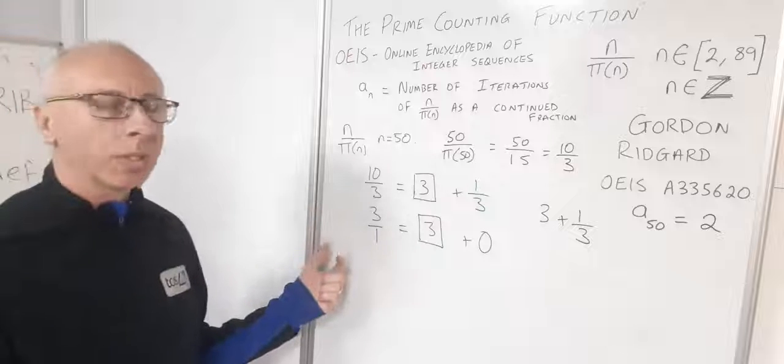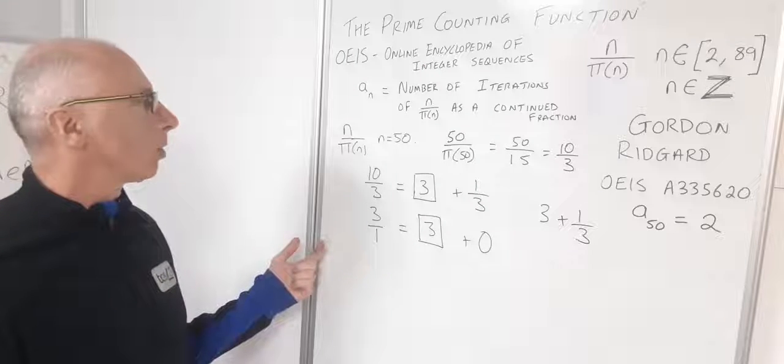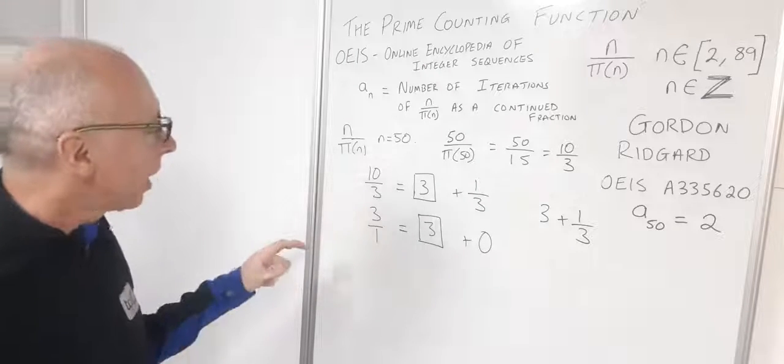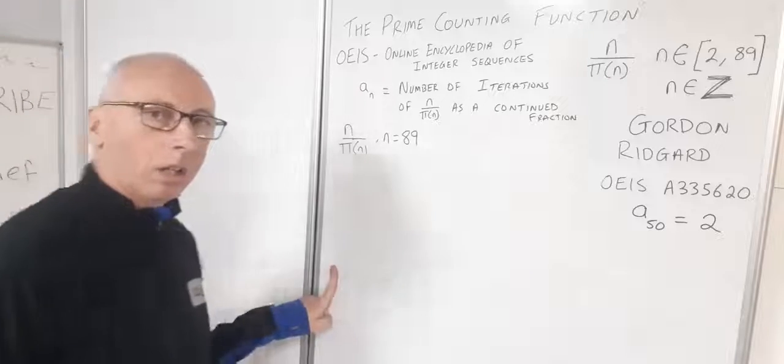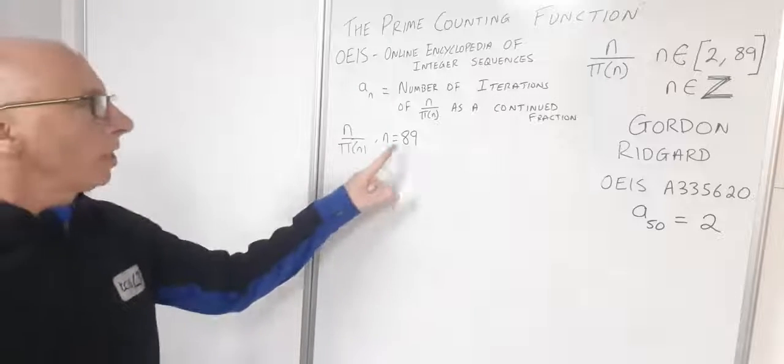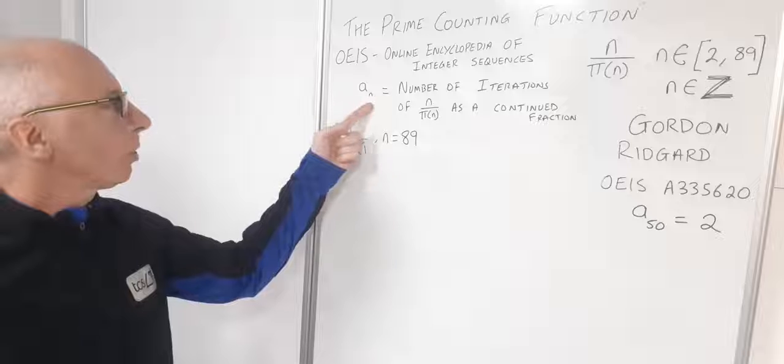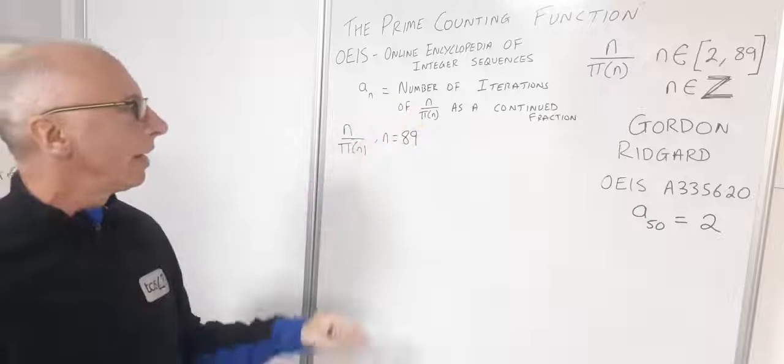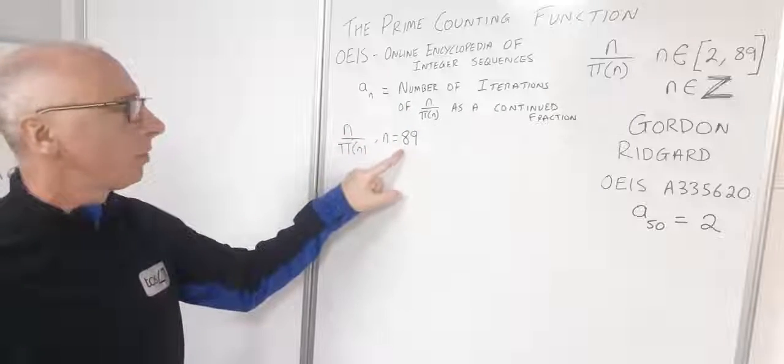Now I'm going to take this off the board and we're going to look at when n equals 89. So we're going to have a look at this number sequence here now for n over π(n). So n over π(n) for 89.